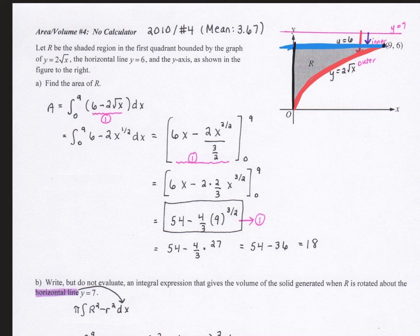Question 4 from area and volume is a no calculator question from the 2010 exam. In this question, I'm given region R, which is bounded by the graph of y equals 6, which is the blue line, and the graph of y equals 2 square root of x, which is the red one.